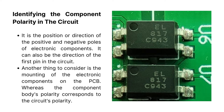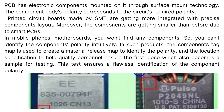Another thing to consider is the mounting of electronic components on the PCB, where the component body's polarity corresponds to the circuit's polarity. PCB has electronic components mounted on it through surface mount technology. Printed circuit boards made by SMT are getting more integrated with a precise component layout, and the components are getting smaller. In mobile phone motherboards, components are so small you can't identify polarity intuitively.